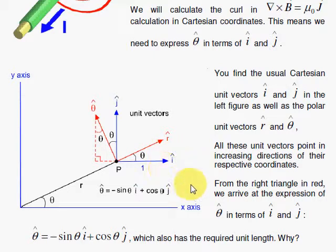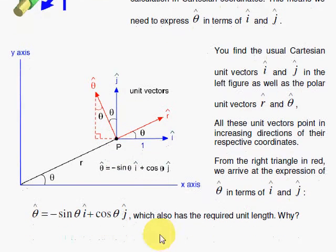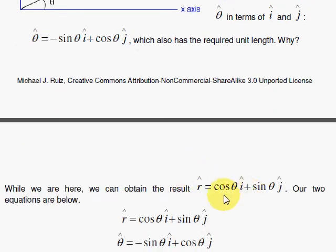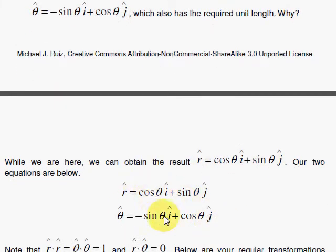For the theta hat, that would be minus I hat. How much? That would be 1 times the sine of theta. And then how much do we go up? We go up cosine theta times J hat. So that is the theta hat, and there is the R hat we got first. So this is our summary.